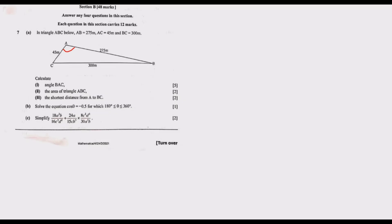We are being asked to calculate angle BAC. The first thing we need to ask ourselves is what have we been given — we've been given all three sides. Is this a right angle triangle? No, we haven't been told that. So since none of the angles given indicate a right angle triangle, we can't use SOH-CAH-TOA. Let us now look at the two options: the sine law or cosine law. The sine law requires that we compare the ratio of the sine of an angle to the opposite side, but in this case we haven't been given any angle.